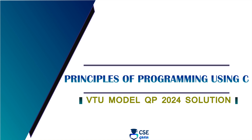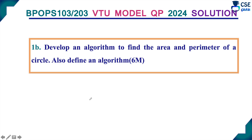Welcome to CSI Guru. In this session, we will discuss SOP VTU model question paper 2024 solution. Question number 1b: develop an algorithm to find the area and perimeter of a circle. Also define an algorithm.